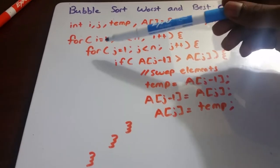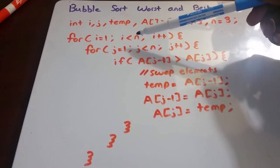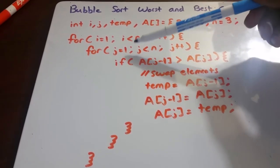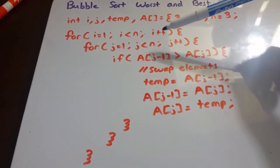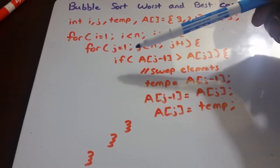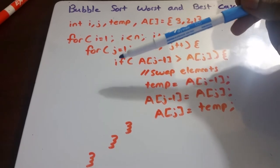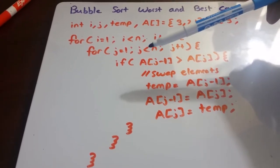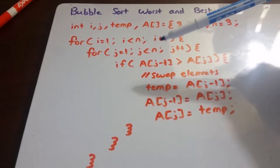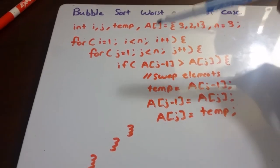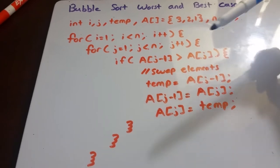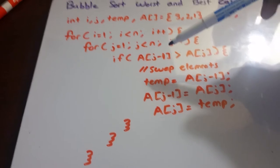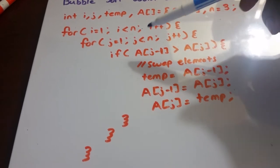We have a for loop that runs from i equals one all the way up to n minus one, so it never reaches n because i is less than n, and i increments by one each time. Within this loop we have another for loop that starts at j equals one and runs up until j equals n minus one — again never reaching n because j is less than n, and j increments by one each time.